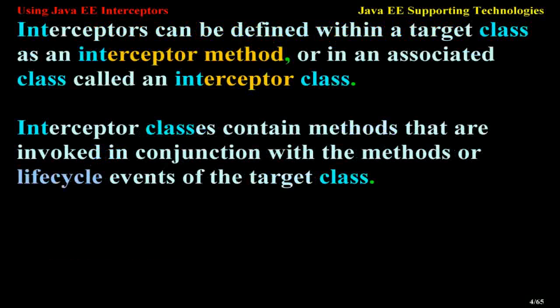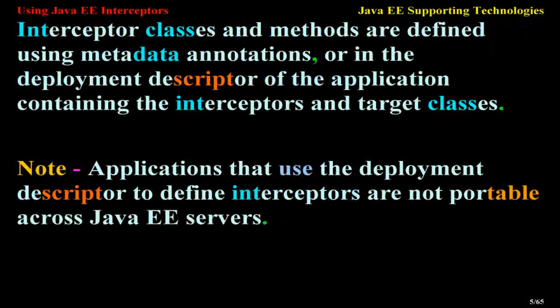Interceptors can be defined within a target class as an interceptor method, or in an associated class called an interceptor class. Interceptor classes contain methods that are invoked in conjunction with the methods or life cycle events of the target class. Interceptor classes and methods are defined using metadata annotations, or in the deployment descriptor of the application containing the interceptors and target classes.